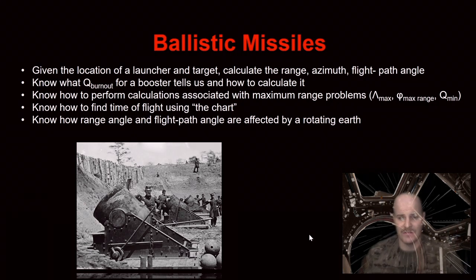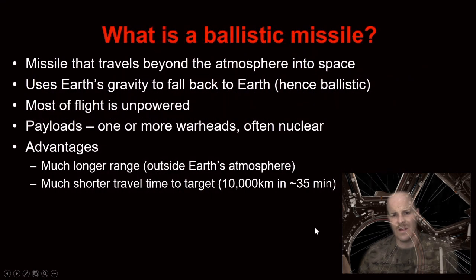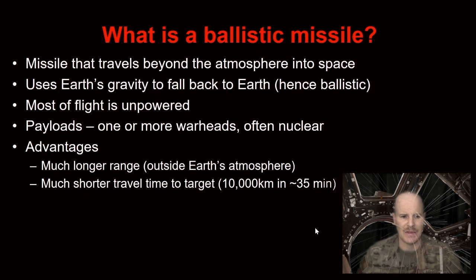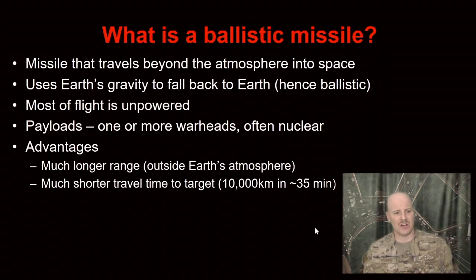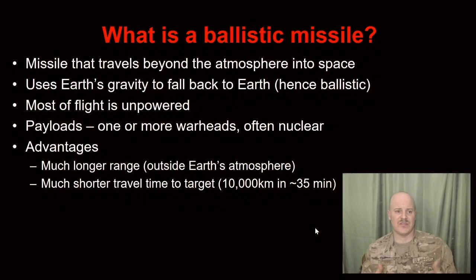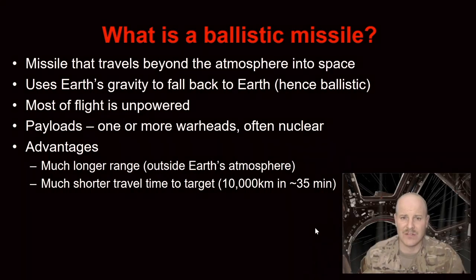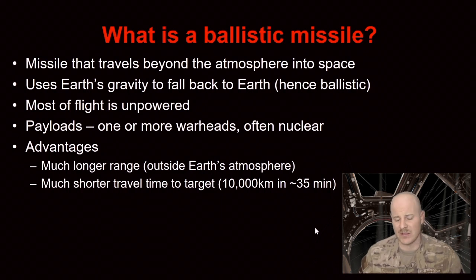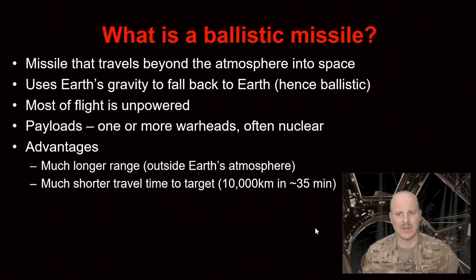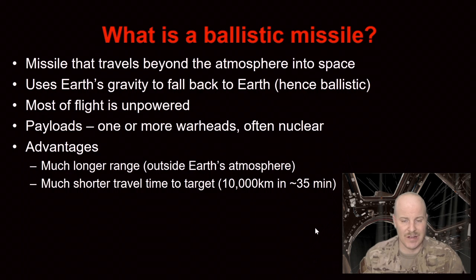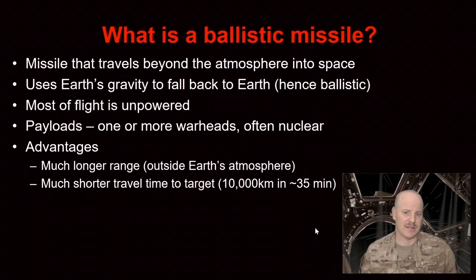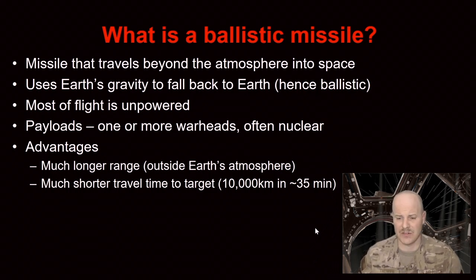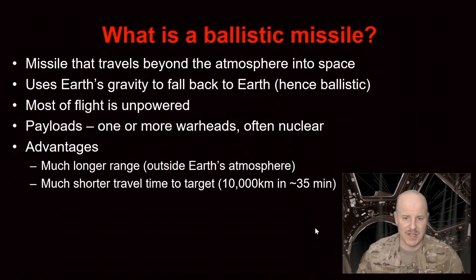What is a ballistic missile? Really what we're discussing is a missile that travels beyond earth's atmosphere up into space and then uses earth's gravity to fall back to earth in a ballistic fashion. So most of its flight is going to be unpowered. Its payload differs from our launch velocities lesson where payloads were typically satellites — in this case, the payload of our rocket is going to be a warhead, more often than not nuclear. Ballistic missiles have much longer range and shorter travel time from launch site to impact site because they operate outside of earth's atmosphere. They can go essentially from continent to continent in 30 minutes.